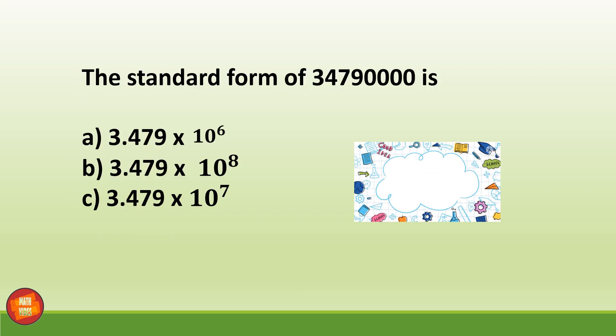And the last question is the standard form of this number 34790000 is? Correct option is option C. See, this is completely a whole number, not a decimal point. For a whole number, after the first digit we have to put a point in the standard form, which is 3.479 into 10. We have to write the power of 10. How do we write the power? Count the whole number digits: 1, 2, 3, 4, 5, 6, 7, 8. Total digits are 8. So 8 minus 1 is 7. So it will give you C option. And that's it.